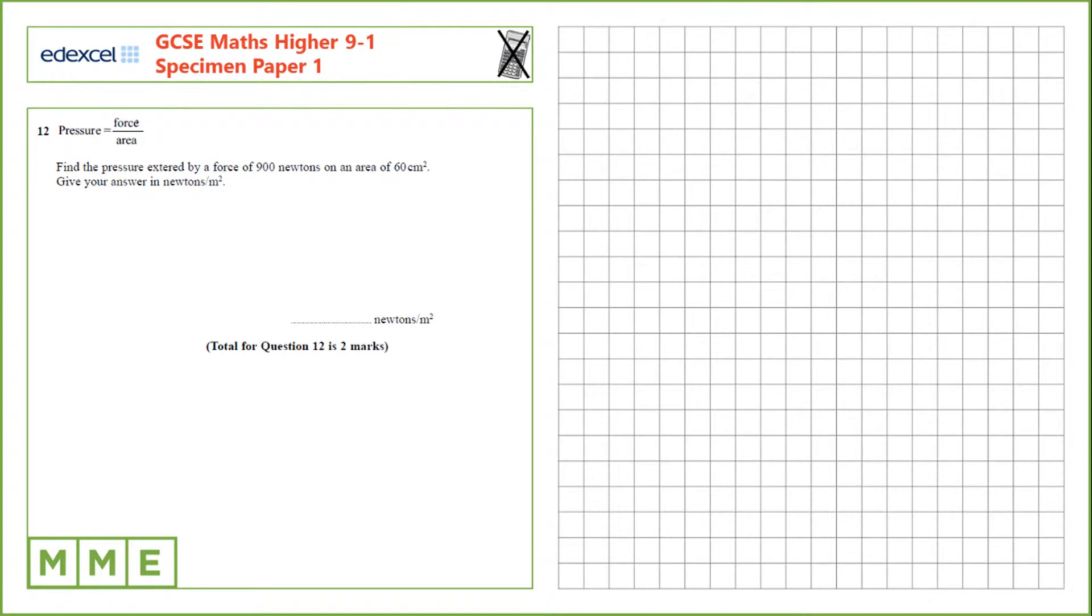Question 12. Pressure is force over area. Find the pressure exerted by a force of 900 newtons on an area of 60 centimeters squared. Give your answer in newtons per meter squared.